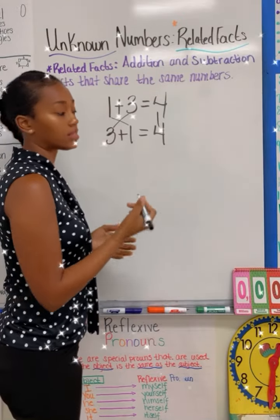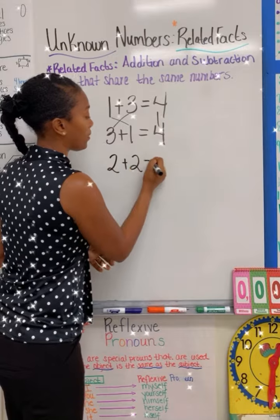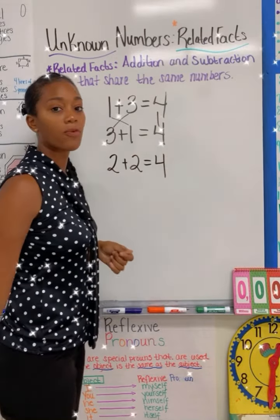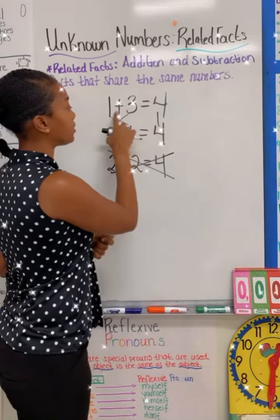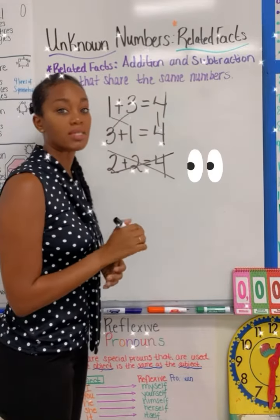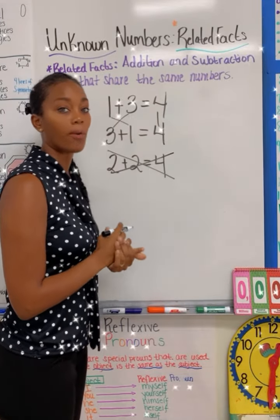For instance, if I had put the number two plus two equals four, that would not be a related fact because the one and the three is missing from the number sentence or equation.